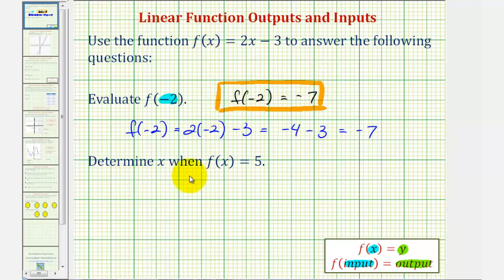Now we want to determine x when f of x equals five. Notice in this case we're given the output or function value of five and we want to determine x or the input. So to do this we're going to substitute five for f of x. So we'd have the equation five equals two x minus three.